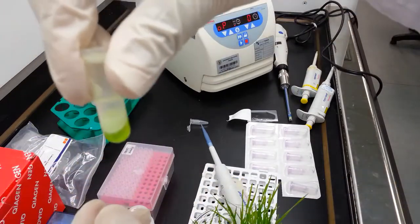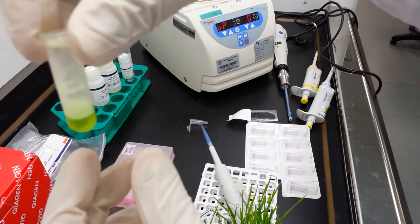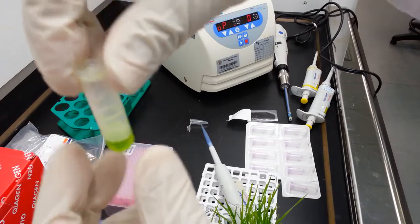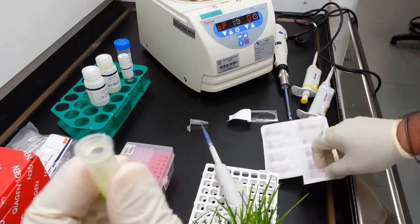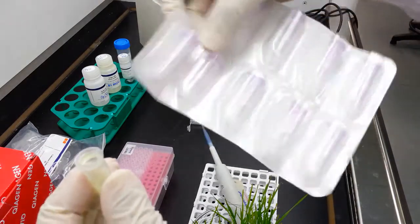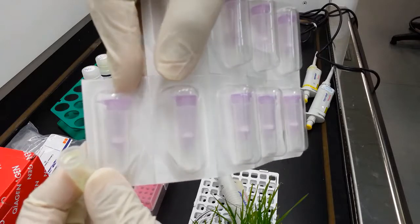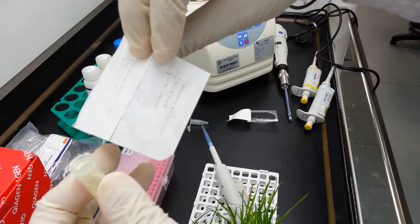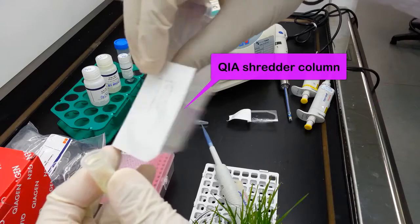This now represents the lysate which contains all the nucleic acids including the DNA and RNA. Now the RNA-Z plant kit comes with this column which is purple in color and this is termed as the Kaya shredder column.